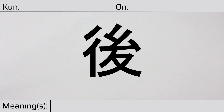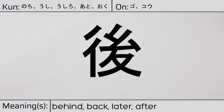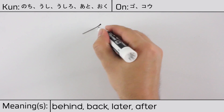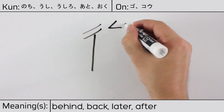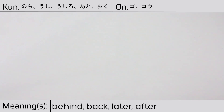Welcome to this lesson on Japanese kanji. Today, we'll be discussing this character. This kanji has kunyomi or Japanese readings of nochi, ushi, ushiro, ato, or oku, and it has onyomi or Chinese readings of go or kau. This character has the meanings behind, back, later, or after. Here is the stroke order.